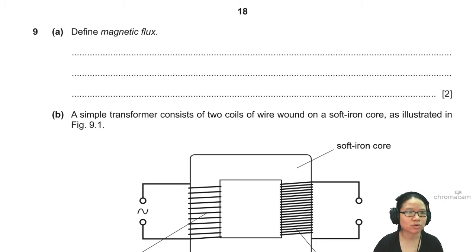Okay, this question, question 9, define magnetic flux. Alright, flux is BA, not linkage, just flux.